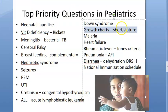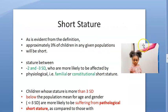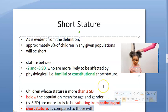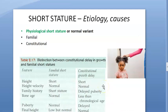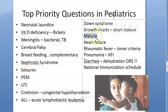Short stature: know the causes. It can be familial or constitutional. Pathological causes include malnutrition, hypothyroidism, and growth hormone deficiency.